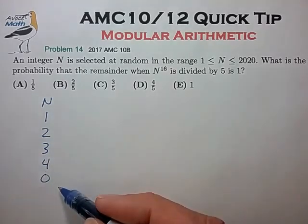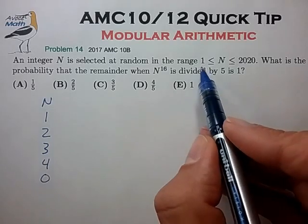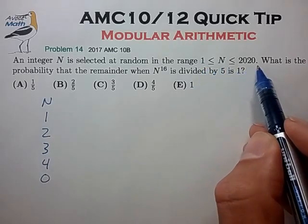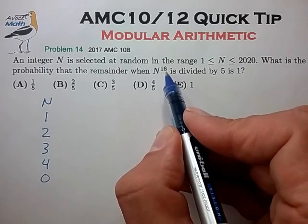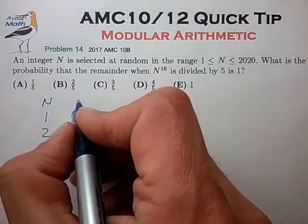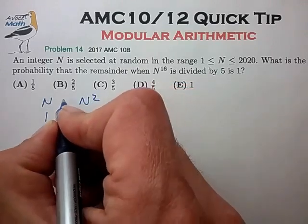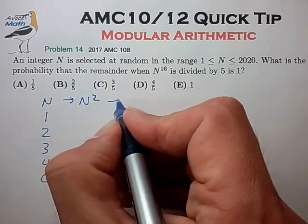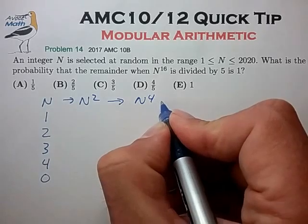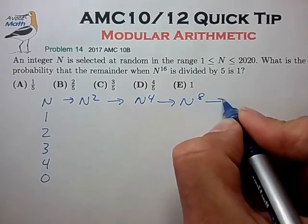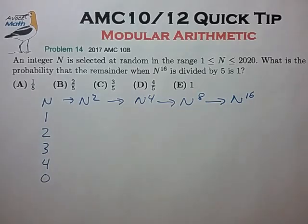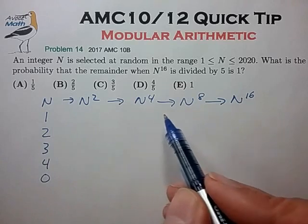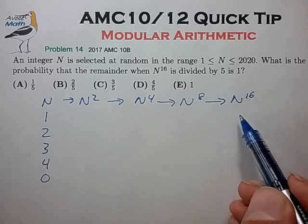And these 5 numbers are evenly distributed over the range of 1 to 2020. Now we also know that taking the power of n to the 16th is a bit like taking repeated squares. Going from n to n squared, n to the 4th, n to the 8th, and finally n to the 16th. So it seems like we just need to track these 5 numbers through this repeated squaring operation. So let's see how that works.